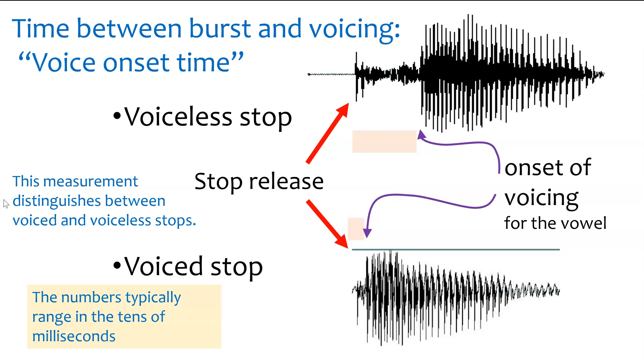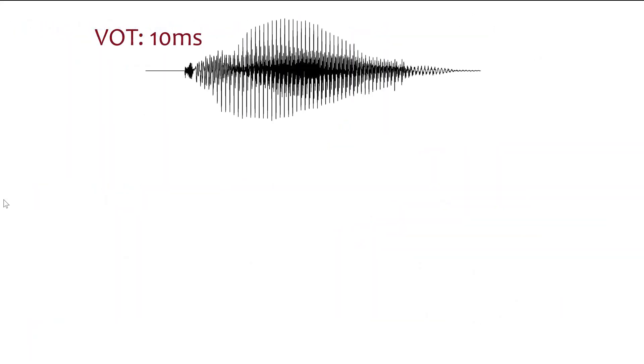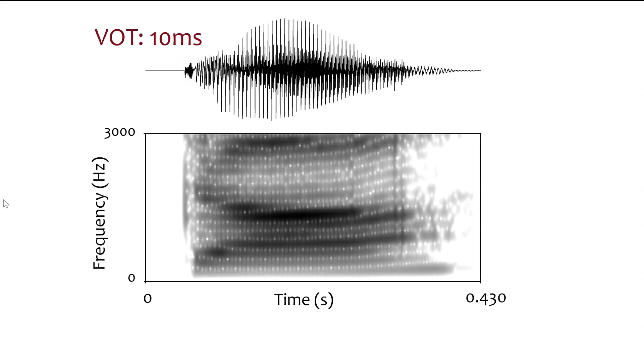And these numbers that we're measuring, the amount of time, typically ranges in the tens of milliseconds. So for example, for a sound that has 10 milliseconds voice onset time, this would be one of our voiced stop sounds like b, d, or g. We can see this in the waveform and on the spectrogram as well. What we want to think about is that little burst moving backwards into the vowel. So the burst stays where it is, but we're thinking about taking periodicity away from the vowel so we can see it in the waveform and in the spectrogram.